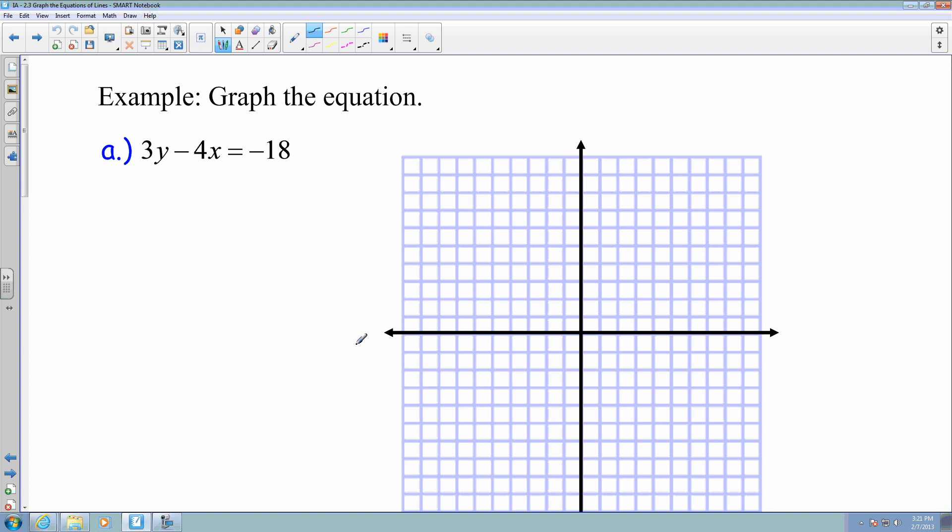So if I would like to graph this equation 3y minus 4x equals negative 18, first thing I want to do is get it into slope-intercept form. I want to solve for y. I want to get rid of my minus 4x on the left-hand side, so I'm going to add plus 4x to both sides. Now I'm left with 3y equals 4x minus 18. Next, I'm going to divide both sides by 3. So now I have y equals 4 over 3x minus 6.